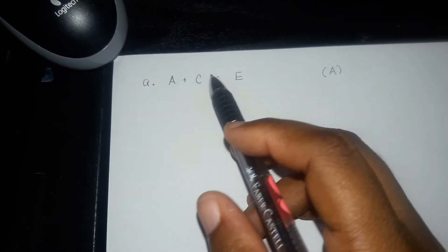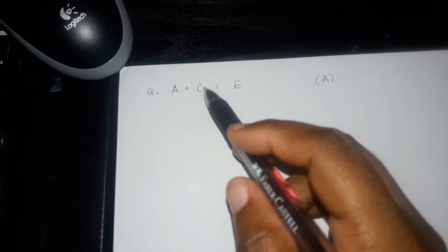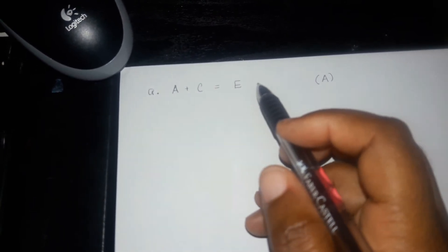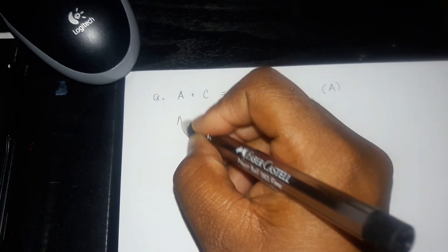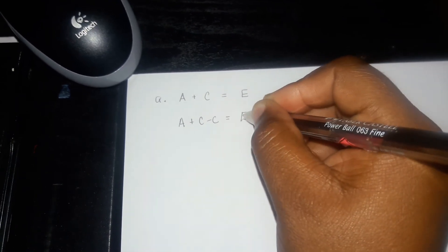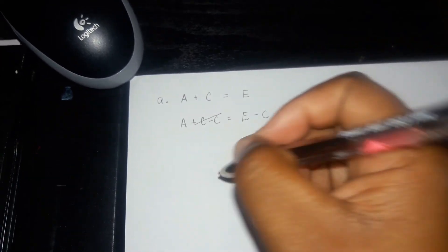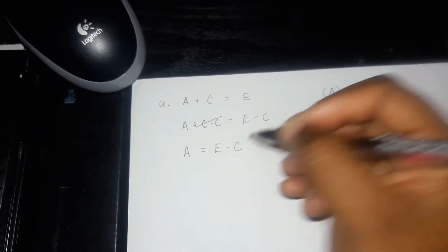Okay, as promised, here are the answers. If you have a plus c equals to e and you want to solve for a, a is on the left-hand side, so you need to get rid of c. Since c is positive, you would have to minus it from itself, and you would also have to minus it from the next side, because whatever you do to the left you must do to the right. So you write a plus c minus c is equal to e minus c. This cancels out and you end up with a equals to e minus c. If you got that answer, really good job.